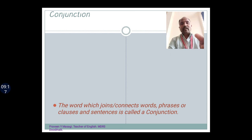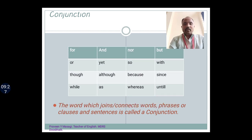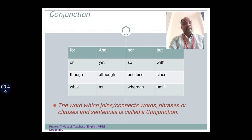Let's look at some examples of conjunctions: for, and, nor, but, or, yet, so, with, though, although, because, since, while, as, whereas, until, etc. In conjunctions, we mainly have three categories: subordinate conjunctions, coordinate conjunctions, and correlated conjunctions. We shall discuss about those kinds in my next video exclusively on conjunctions.